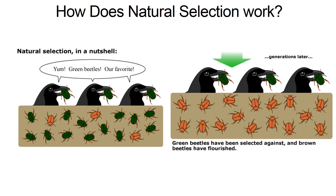I love this little cartoon here with these ravens eating these beetles. What's happening here is that these ravens, or crows, are eating green beetles. What that means is the green beetles are less likely to survive and pass on their genes to the next generation.